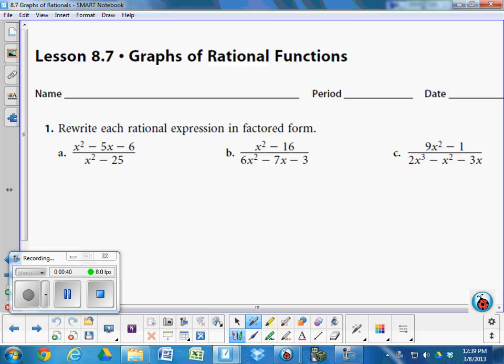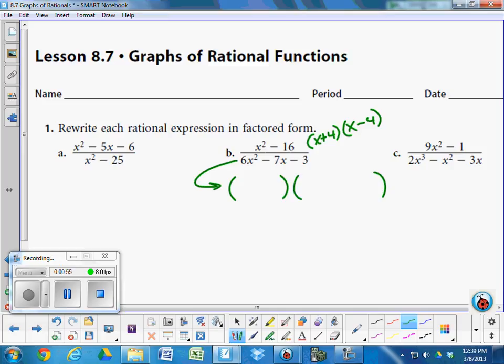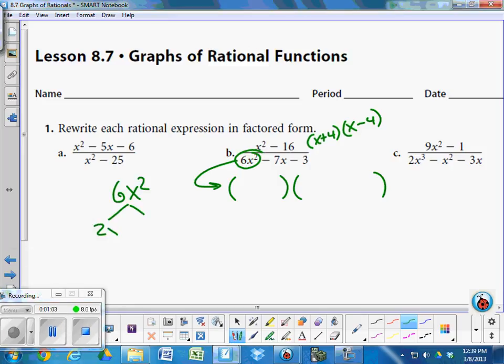So instead, what you want to do with this, we're just doing the bottom. We already established off the video that the numerator is x plus 4, x minus 4. With the denominator now, you want to think of some ways to make 6x squared by multiplying. What are some ways you can do that? 2x times 3x. That makes 6x squared. And x times 6x. So those are really your only two options to make 6x squared.